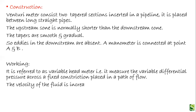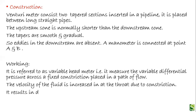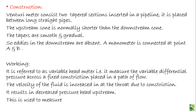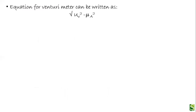The velocity of the fluid increases at the throat due to constriction, resulting in decreased pressure head upstream. This is used to measure the rate of flow using a manometer. The equation for the venturi meter: √(μᵥ² − μA²) = Cᵥ√(2g·Δh).